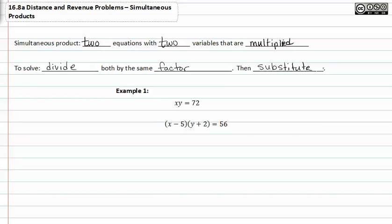In example one, we see that we have xy equals seventy-two. If we solve for y, we would divide both sides of this equation by x. So now we have y is equal to seventy-two over x.